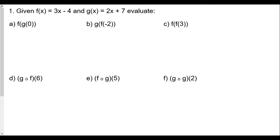In function notation, the last lesson, we saw that whatever we saw in the parenthesis for the function is what we plugged in for x. And what we see is a kind of double parenthesis here. So let's take a look at the first question: given f of x equals 2x minus 4, g of x equals 2x plus 7, evaluate f of g of 0.